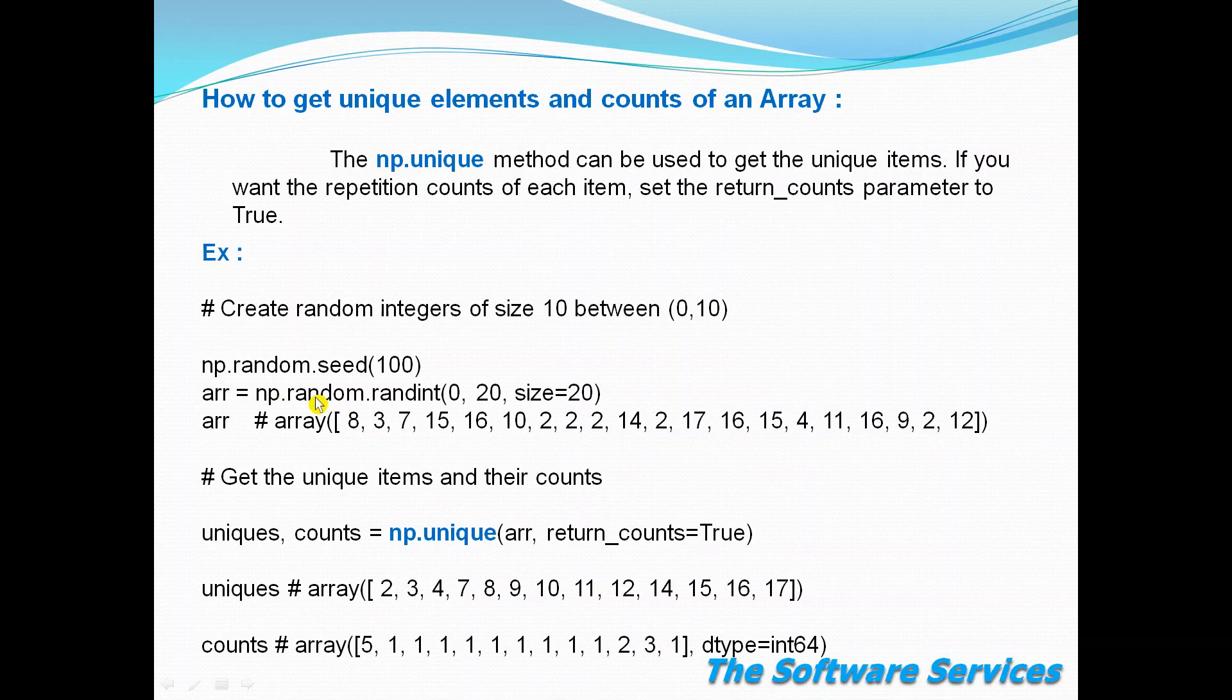Generate random integers from 0 to 20, size 20. That means it will generate 20 numbers between 0 and 20. In these 20 numbers, some duplicate numbers will come and unique numbers will also come.